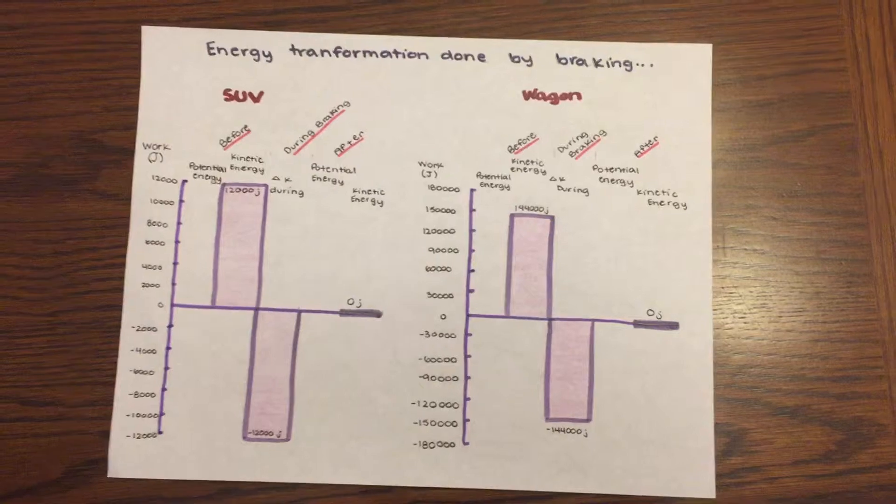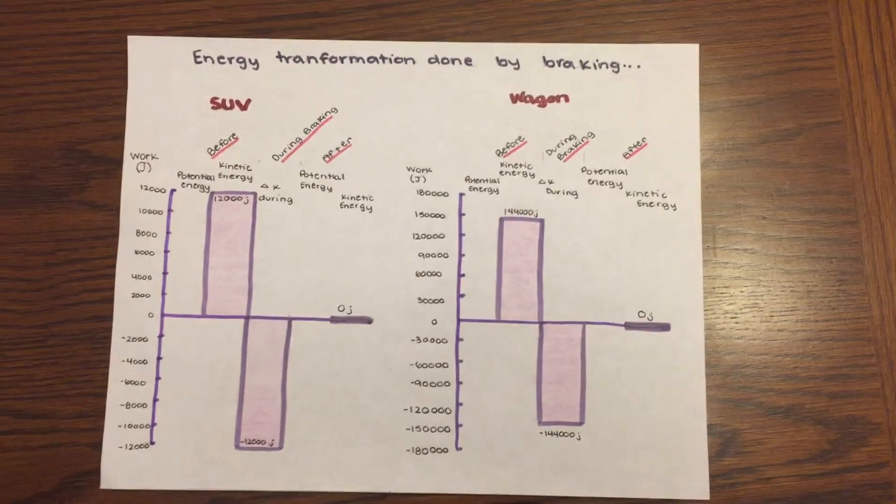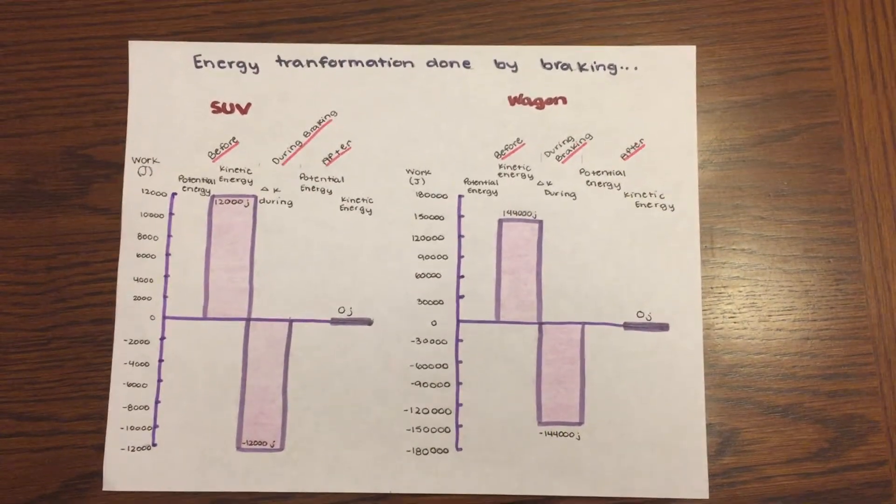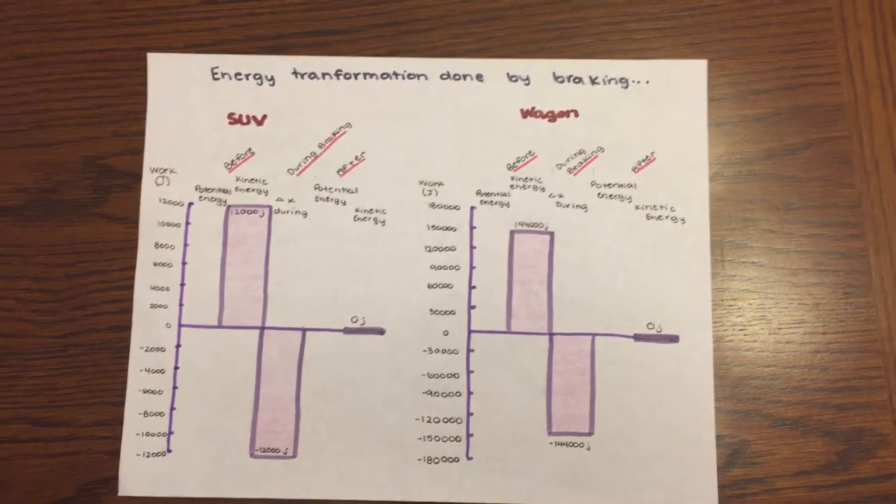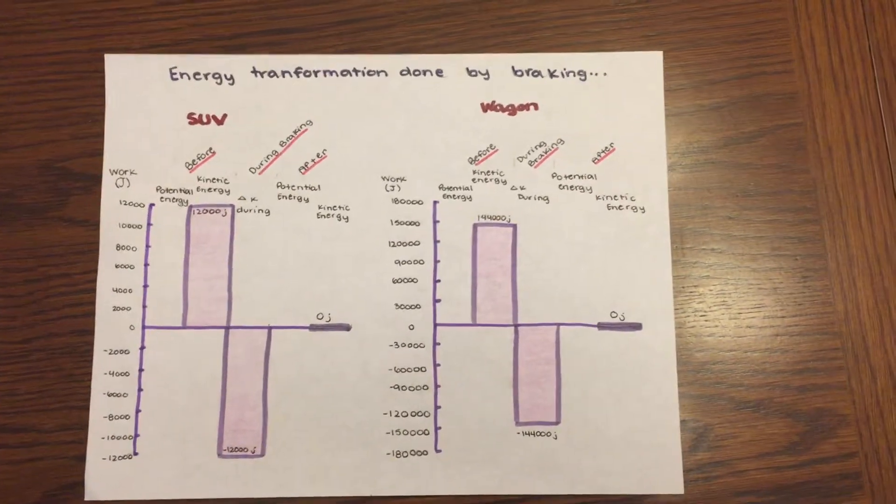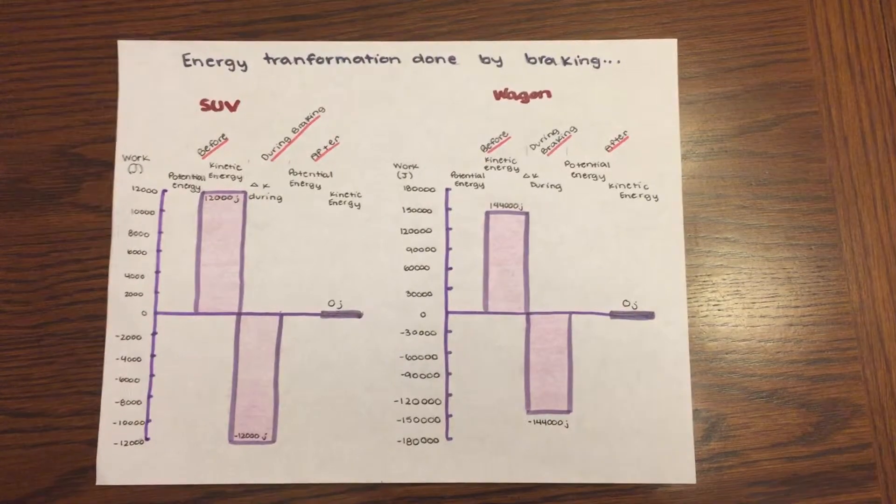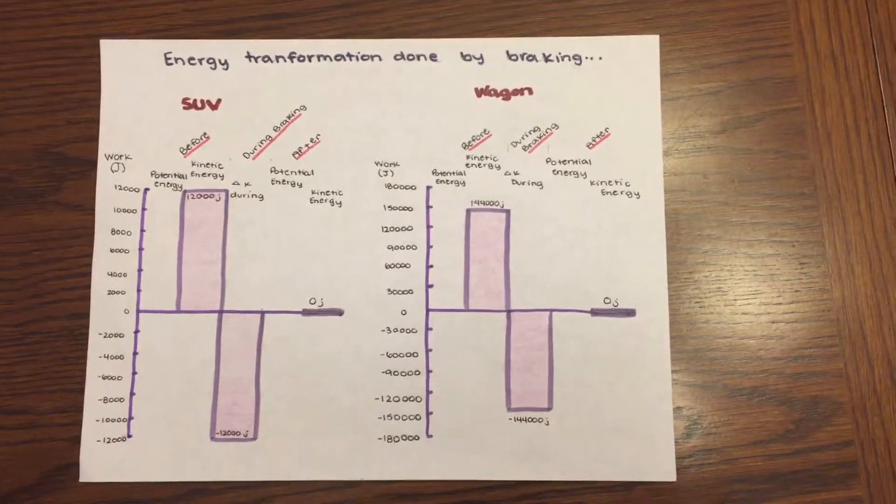These diagrams show the energy transformation done by the locked brakes of the two cars. The SUV stopped in 2 meters, losing 12,000 joules. The wagon, however, losing 144,000 joules, took 24 meters to stop completely.